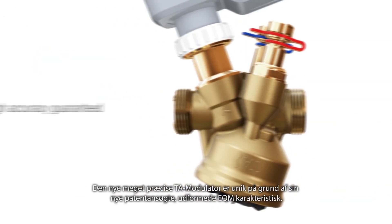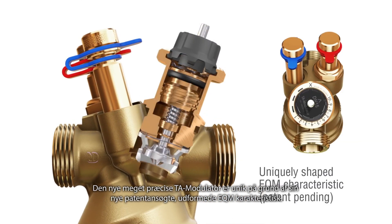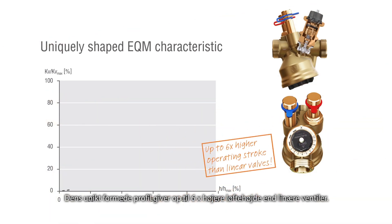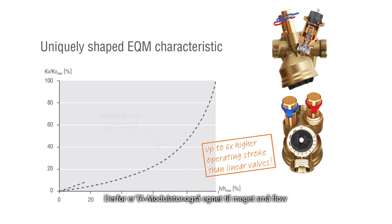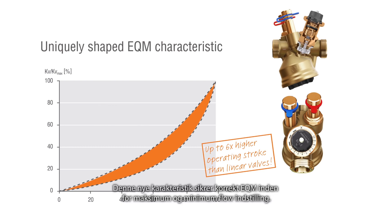The new highly precise TA modulator is unique due to its new patent pending uniquely shaped EQM characteristic. Its uniquely shaped profile provides an up to six times higher operating stroke than linear valves. Therefore, TA modulator is able to precisely control also very small flows. The new characteristic remains equal percentage within the range of maximum and minimum flow settings.